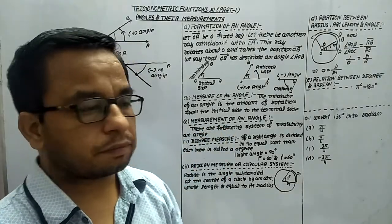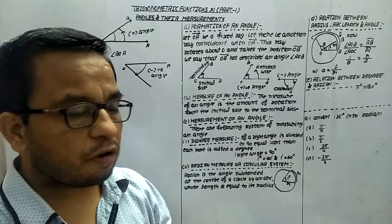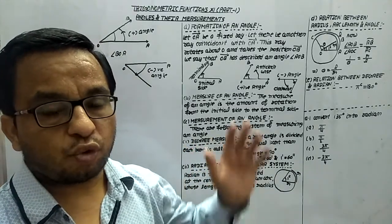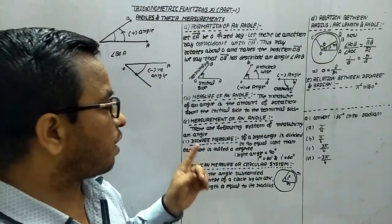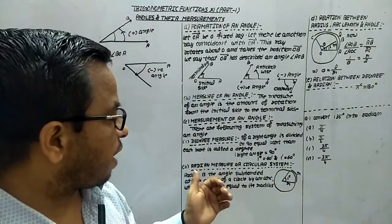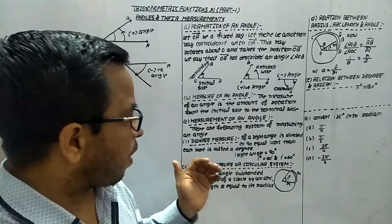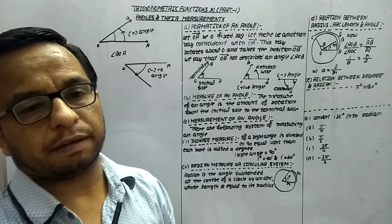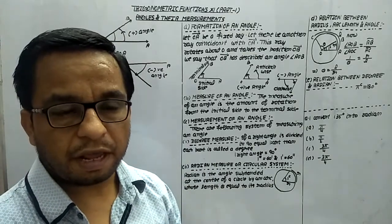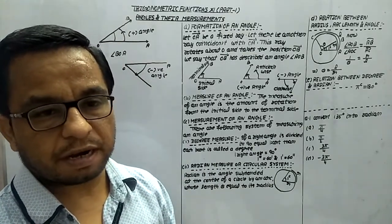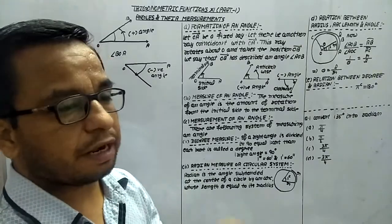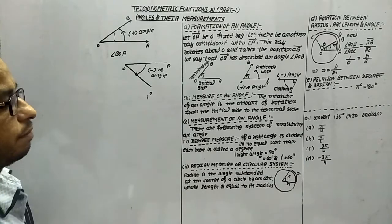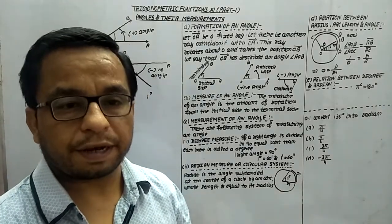Measurement of an angle — there are the following systems of measuring an angle. Basically these two are very important. Number one is degree measure. If a right angle is divided into 90 equal parts, then each part is called a degree. It is represented as one degree, 45 degrees, 30 degrees — it depends upon the amount of rotation.